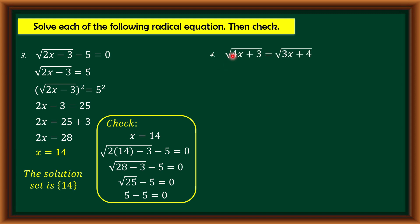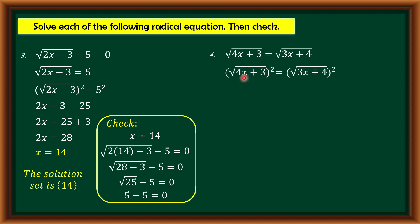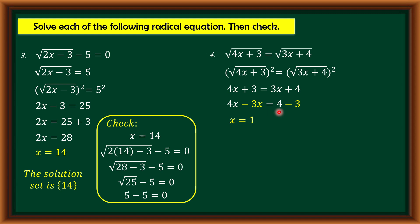Another example: square root of 4x plus 3 is equal to square root of 3x plus 4. Since radicals are on both sides, raise both sides by 2. We get 4x plus 3 is equal to 3x plus 4. Combining like terms by transposing 3x to the left and positive 3 to the right: 4x minus 3x equals 4 minus 3, so x equals 1.